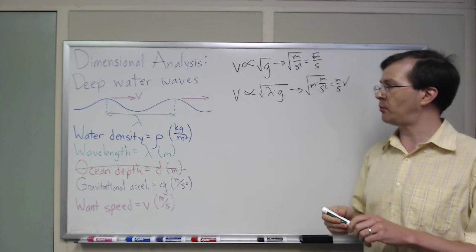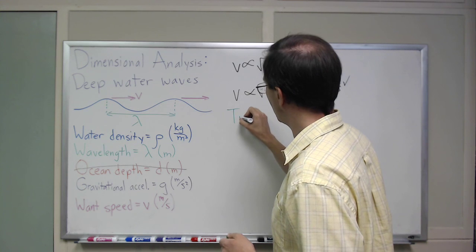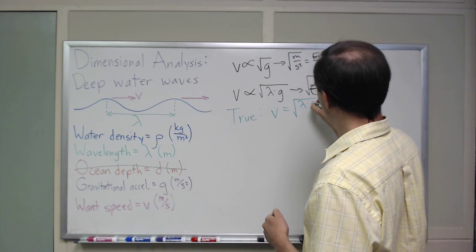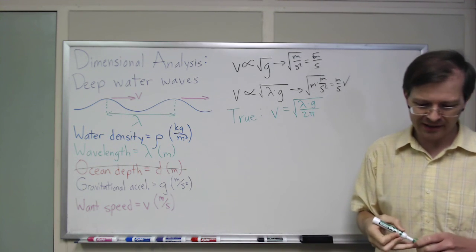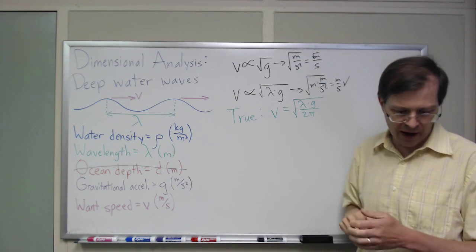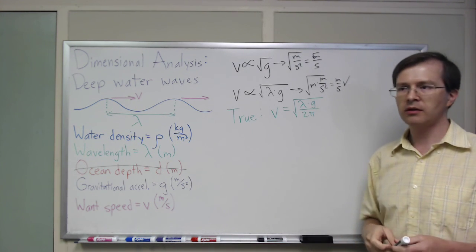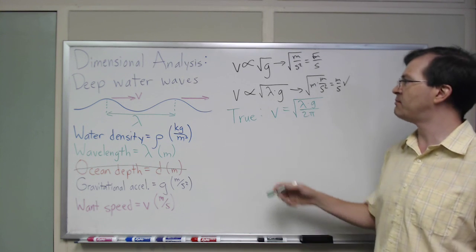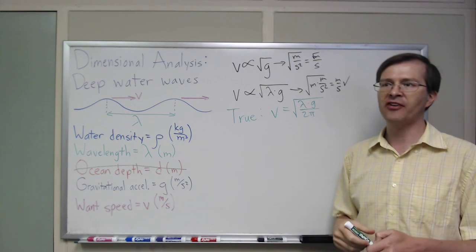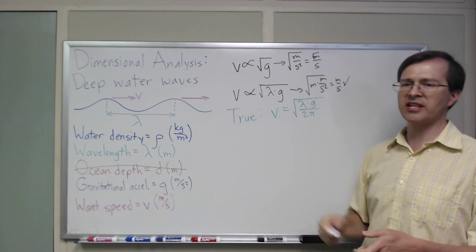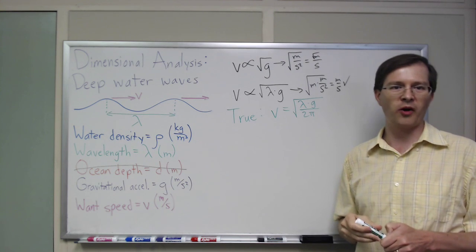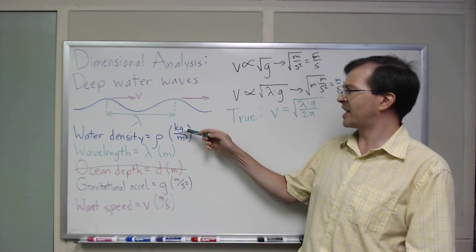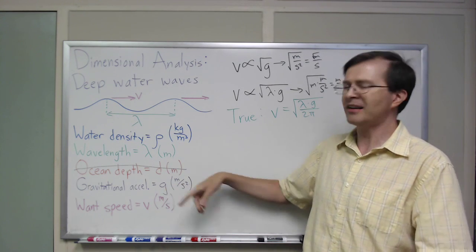So v is proportional to the square root of lambda times g — that's my dimensional analysis answer. And it turns out, the people who actually study this tell me that the true answer for deep water waves is v equals the square root of lambda times g divided by 2 pi. That 1 over 2 pi is approximately 0.4, so if I had guessed this formula I'd only be off by a factor of basically a half — basically the right order of magnitude. Much quicker than learning all of fluid mechanics and how it applies to ocean wave behavior. That was the intuitive way.